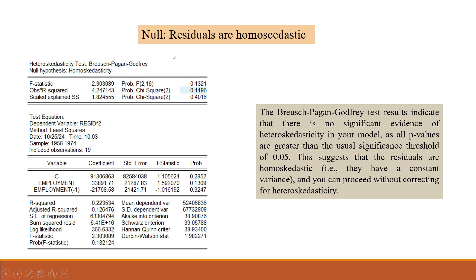The null is residuals are homoscedastic. This is the p-value which we have to see, that is for the observed R-square, observed into the R-square. The Breusch-Pagan-Godfrey test indicates the results indicate that there is no significant evidence of heteroscedasticity in the model.